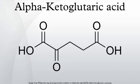Alpha-ketoglutarate is a key intermediate in the Krebs cycle, coming after isocitrate and before succinyl-CoA. Anaplerotic reactions can replenish the cycle at this juncture by synthesizing alpha-ketoglutarate from transamination of glutamate, or through action of glutamate dehydrogenase on glutamate.